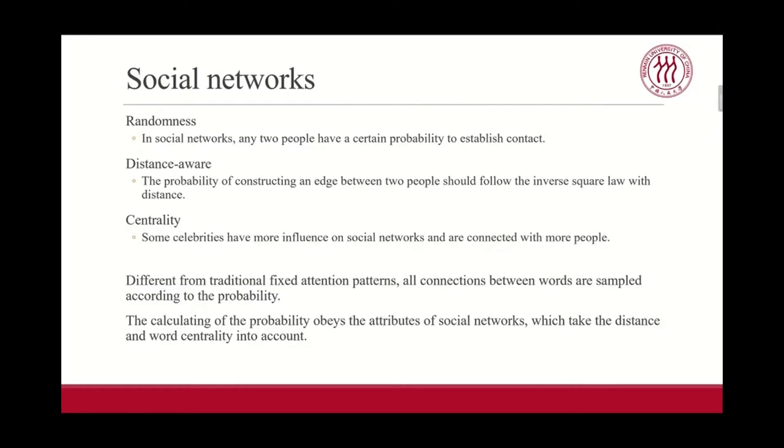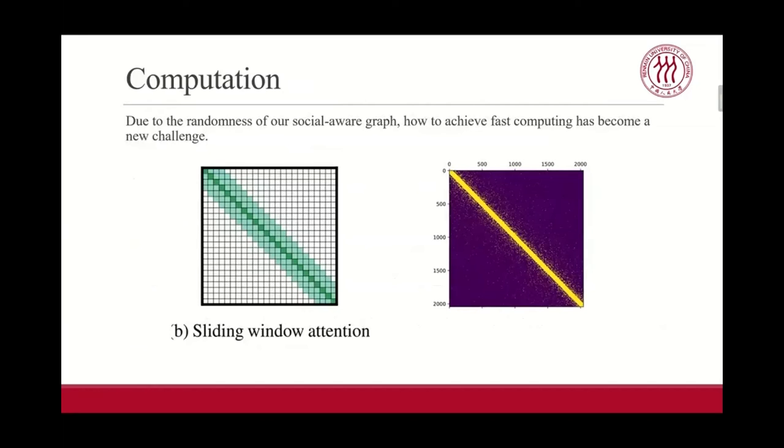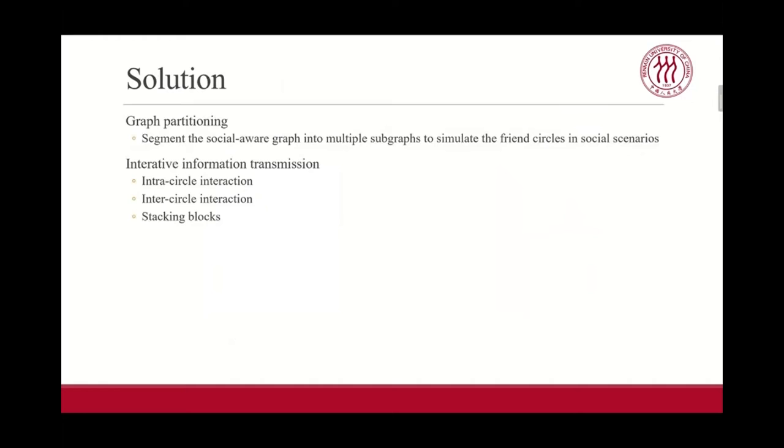Under such a strategy, the graph we construct imitating social networks can enhance the information transmission in the document while ensuring the sparsity. However, due to the randomness of our probability sampled graph, how to achieve fast calculation becomes a new challenge. The reason why previous sparse attention metrics can handle long documents is that they can be easily split into multiple small self-attention blocks. So to solve this problem, we propose to segment the graph into multiple subgraphs to simulate the friend circles in social scenarios.